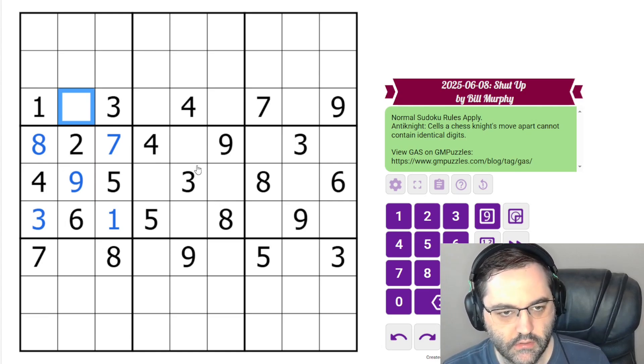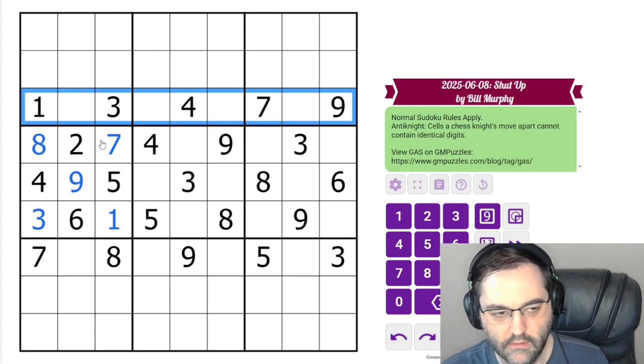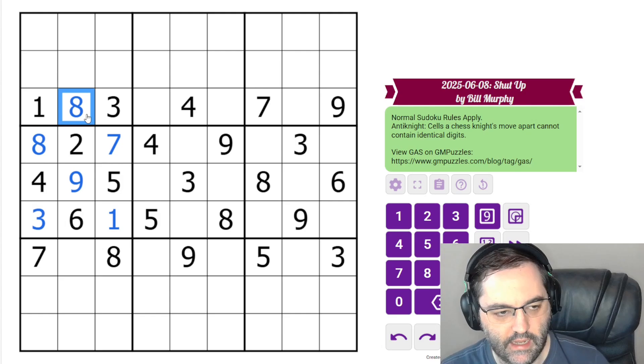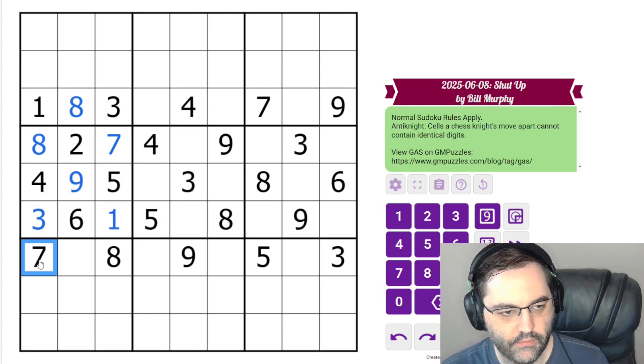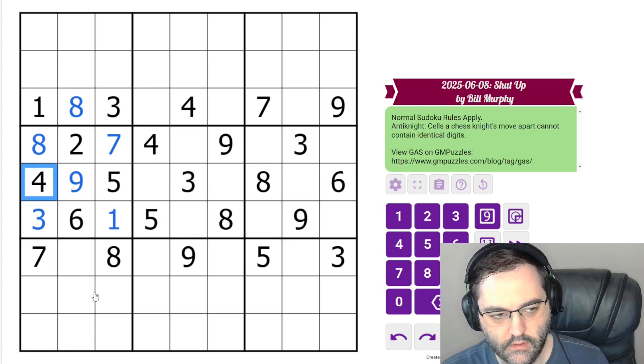This cell, actually, we can resolve. The row needs two, five, six, eight. And that cell sees two, six, and five by anti-knight, so this must be eight. This row needs one, two, four, and six. Two, six here, and a four here by anti-knight, so this must be the one.